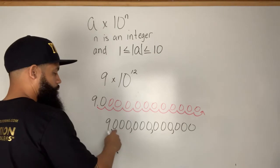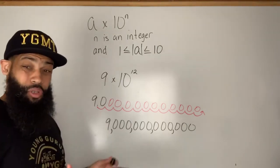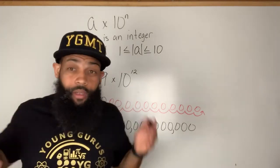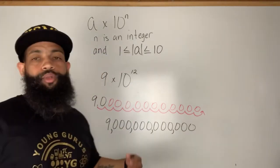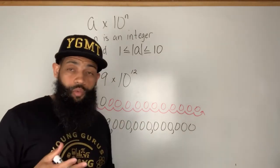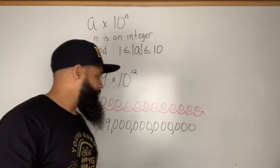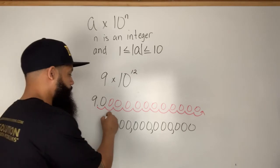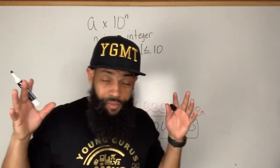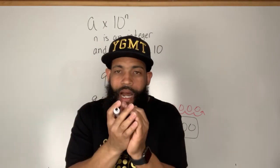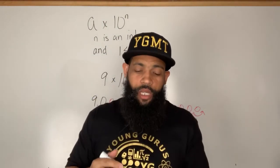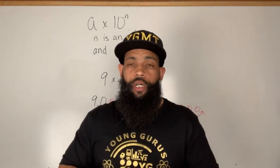Nine trillion! Who wants to write the number nine trillion over and over again with all those twelve zeros? This is why we use scientific notation — because we want to write a number that has a lot of digits in a more compact way.